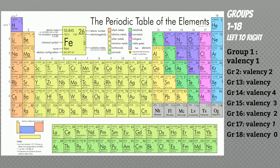There are some rows and columns. The columns are called groups — there are 18 groups — and the horizontal rows are called periods. There are 7 periods and 18 groups. Group 1, that means hydrogen to francium, has 1 electron in the outermost shell, so their valence is 1. Group 2 has a valence of 2 because they have 2 electrons in the outermost shell.